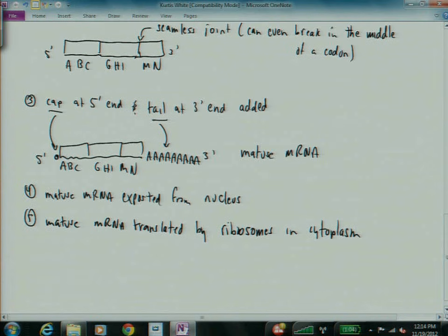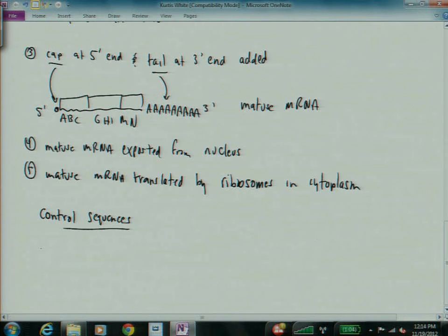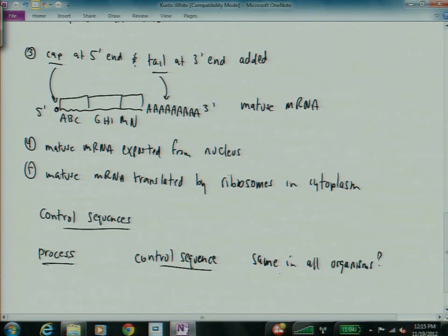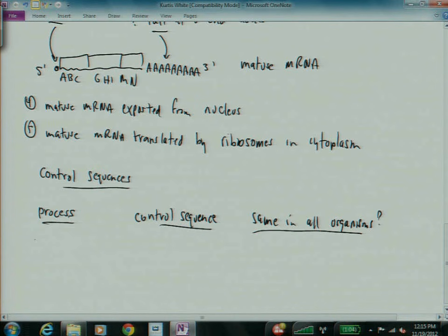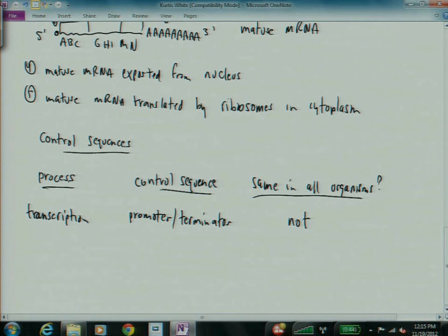Let me just make a small summary here. As I said, all these processes have control sequences. So the process, control sequence. Make a little table here. And then is it the same in all organisms? So transcription is controlled by promoters and terminators. And these are not the same in all organisms. That is, a promoter sequence in a bacterium would not work for the RNA polymerase in our cells, and vice versa. Splicing is controlled by start and stop intron sequences. These are also not the same in all organisms.